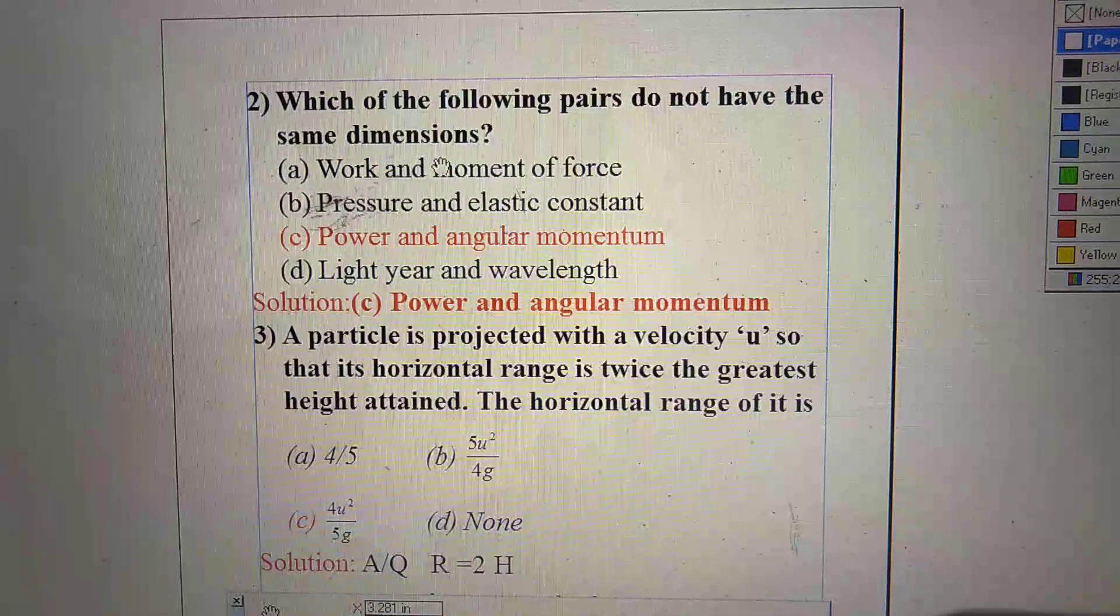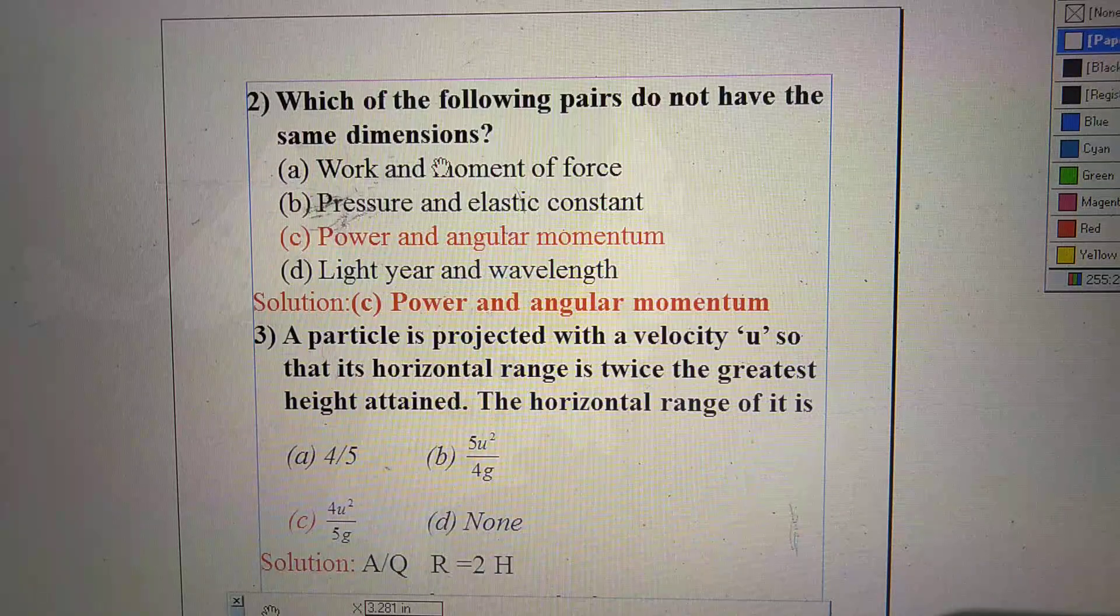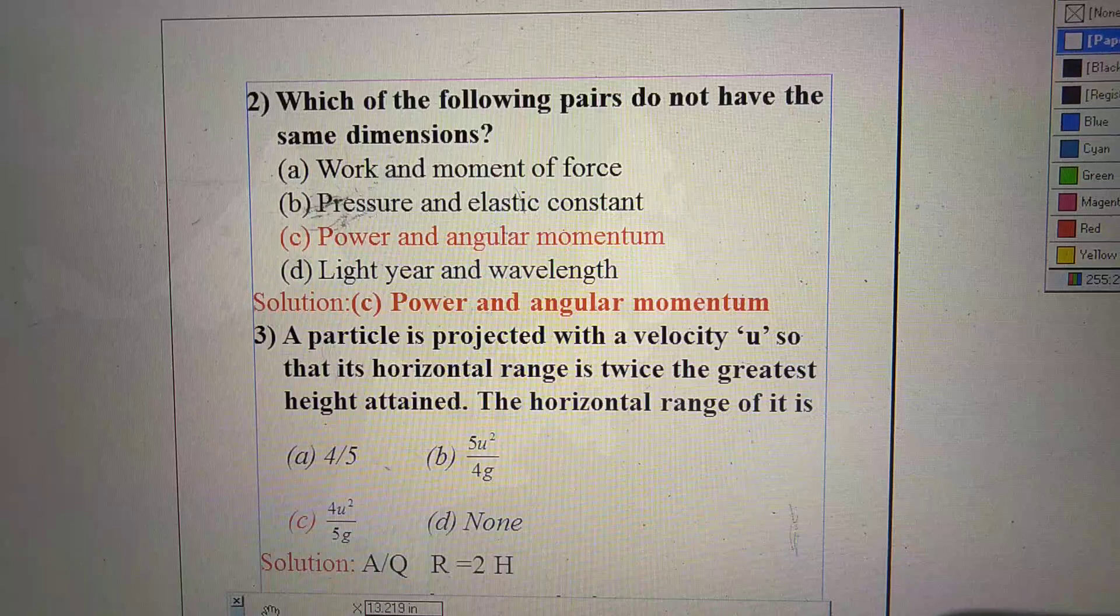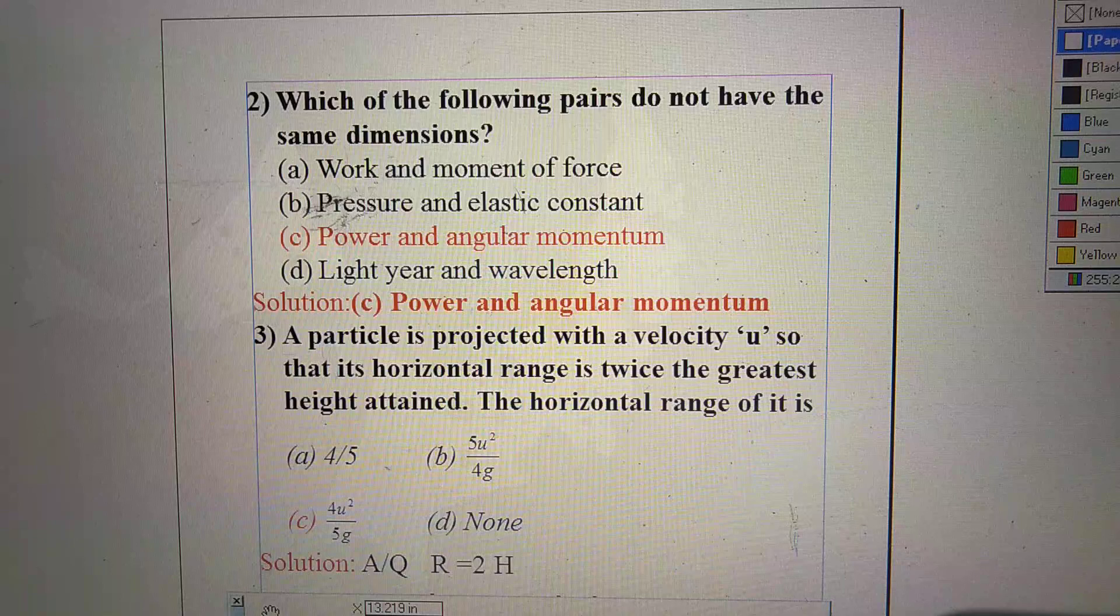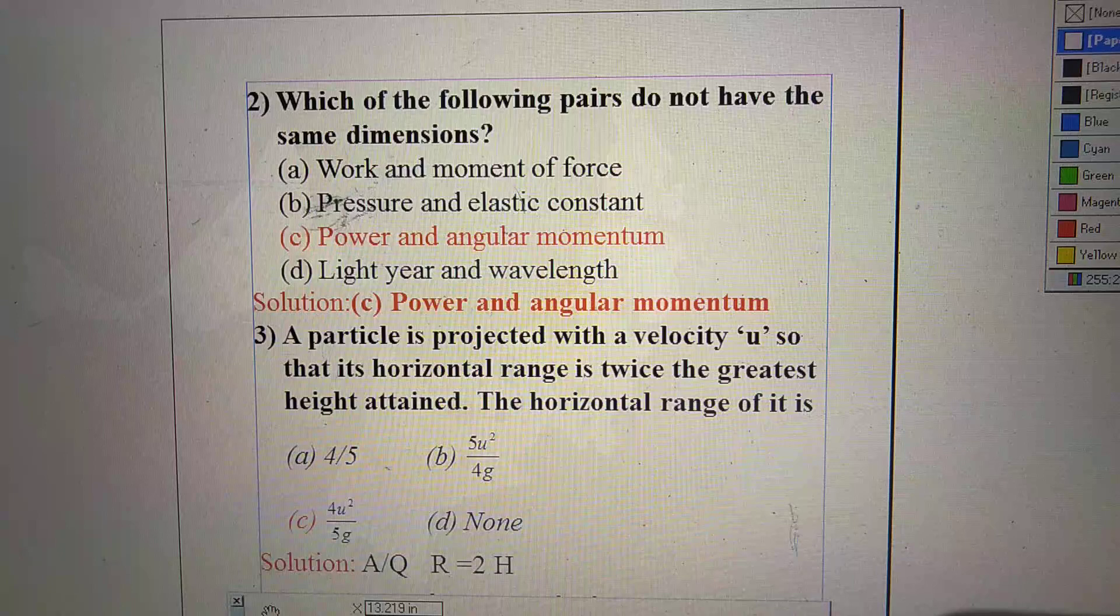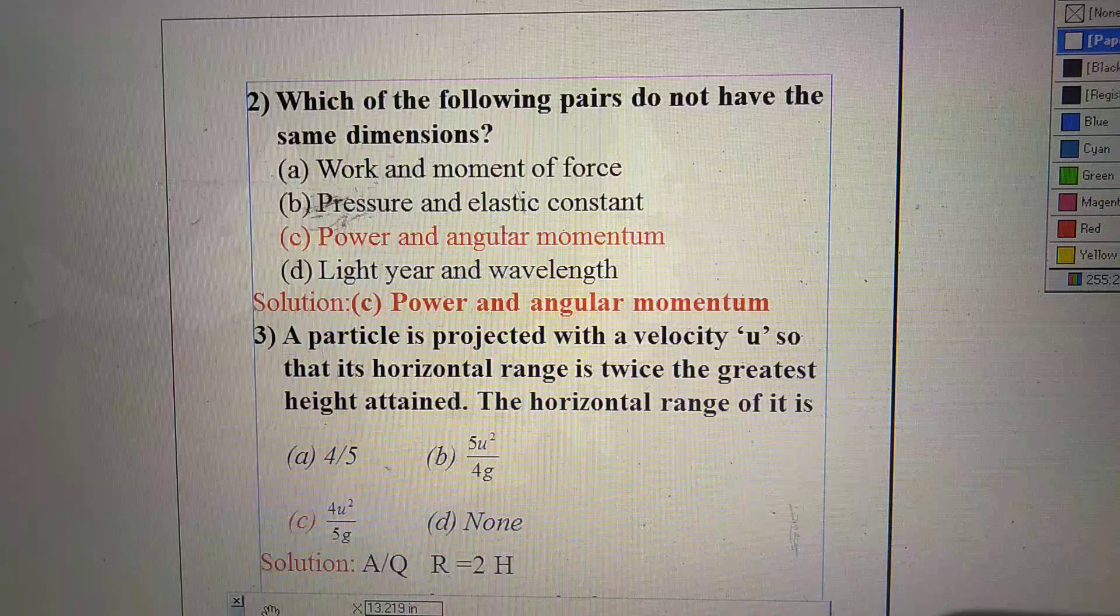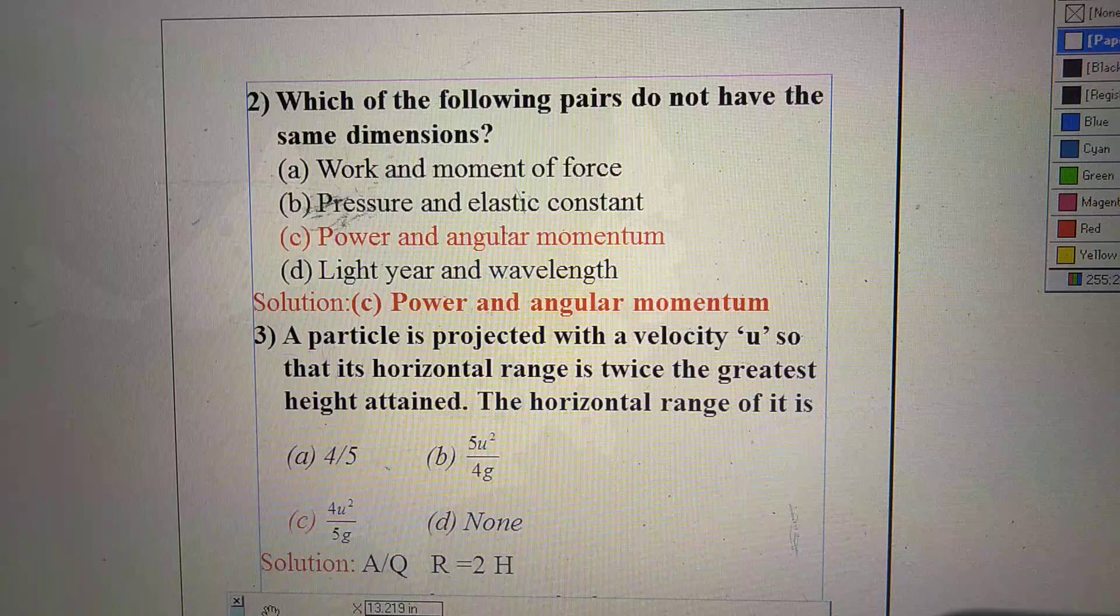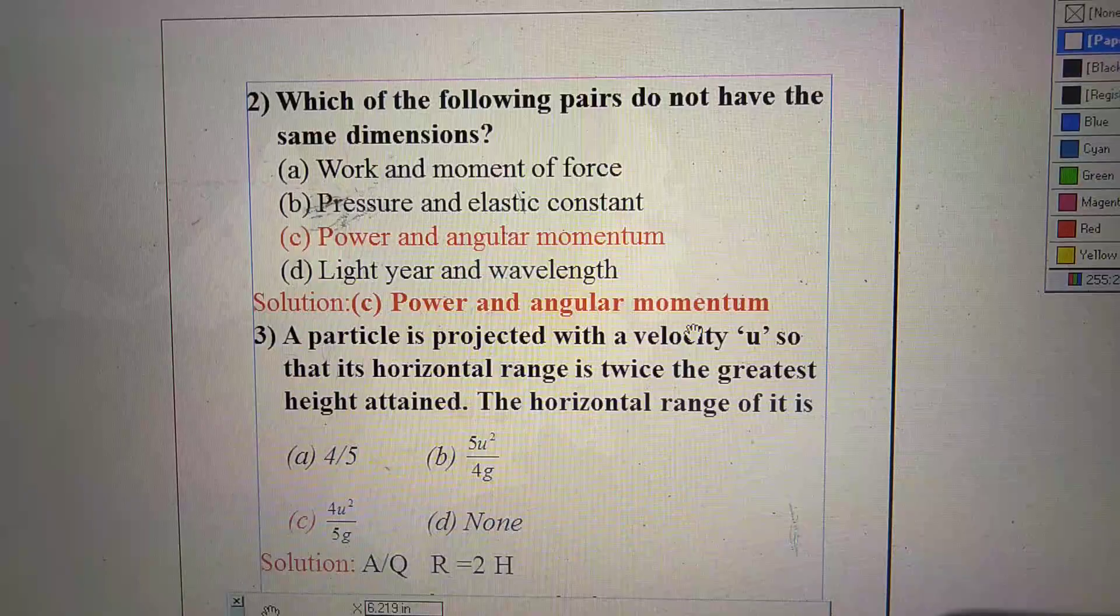Number 2 question. Which of the following pairs do not have same dimension? Option A: work and moment of force. Option B: pressure and elastic constant. Option C: power and angular momentum. Option D: light year and wavelength. This question is knowledge based and the right option is C. That is power and angular momentum. Let's proceed to the third question.